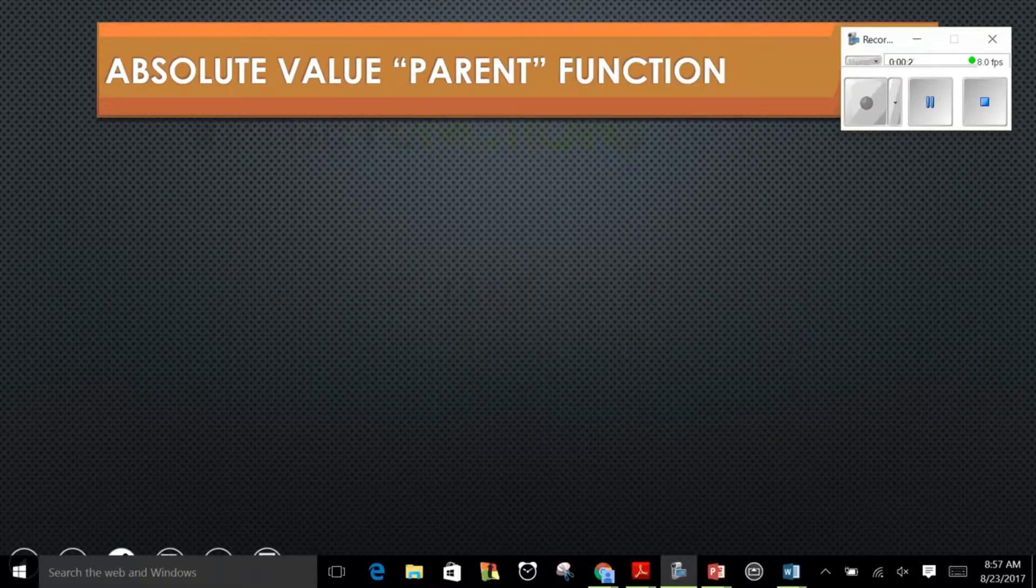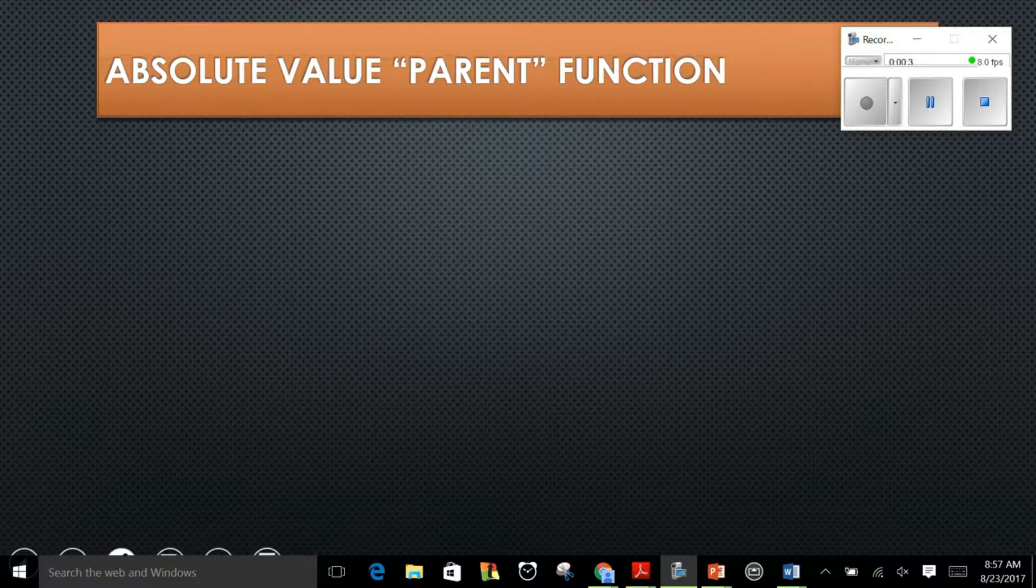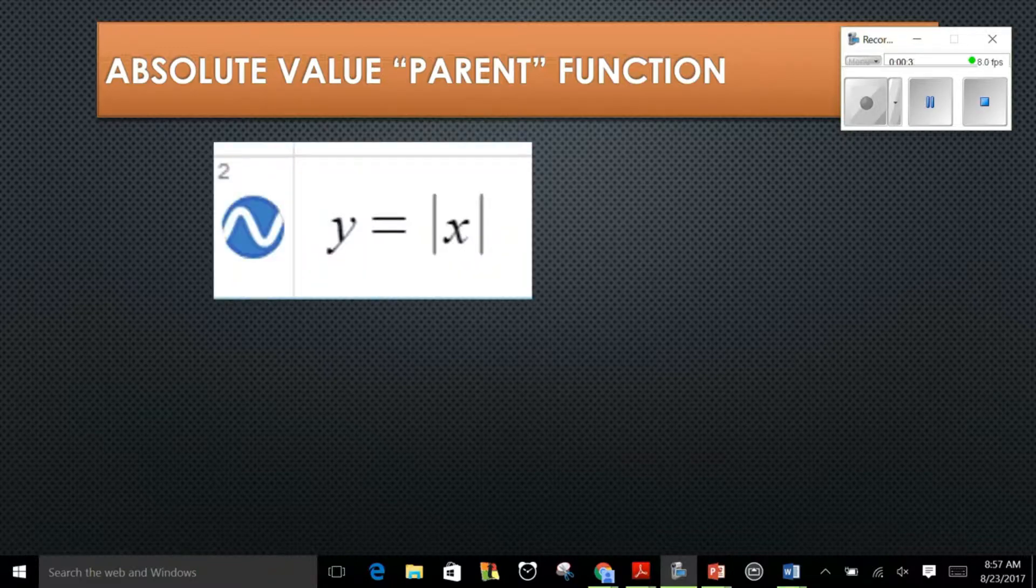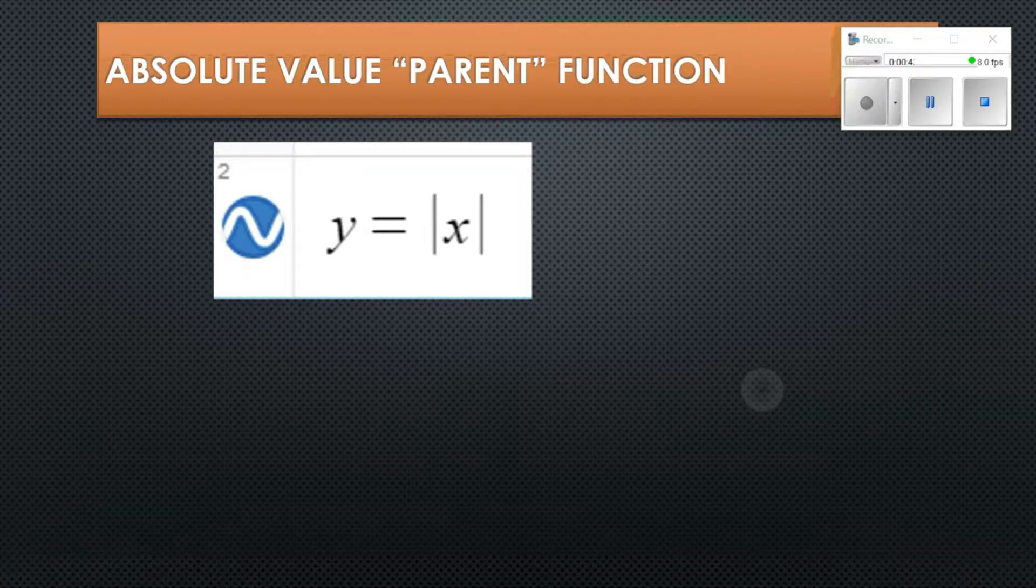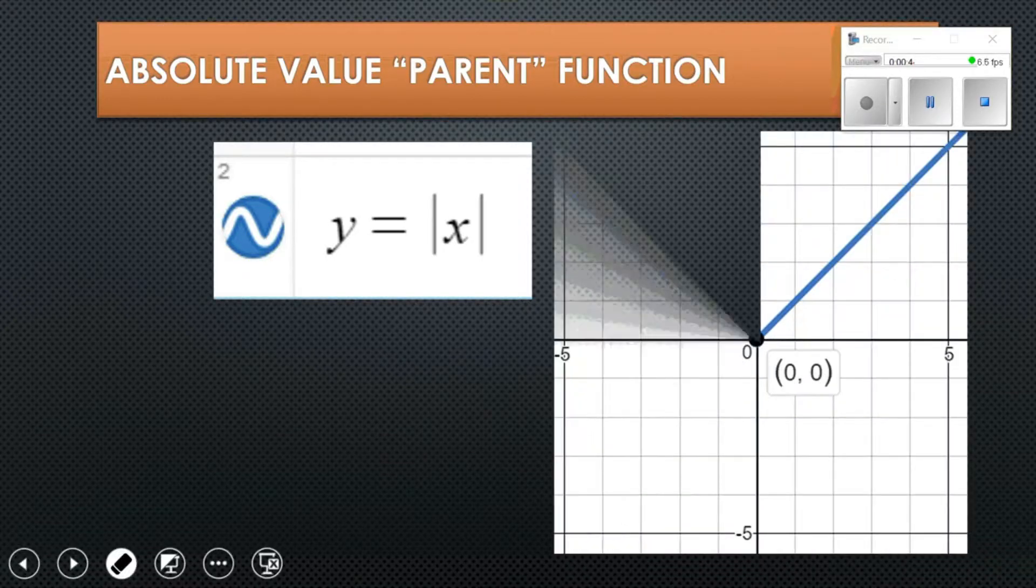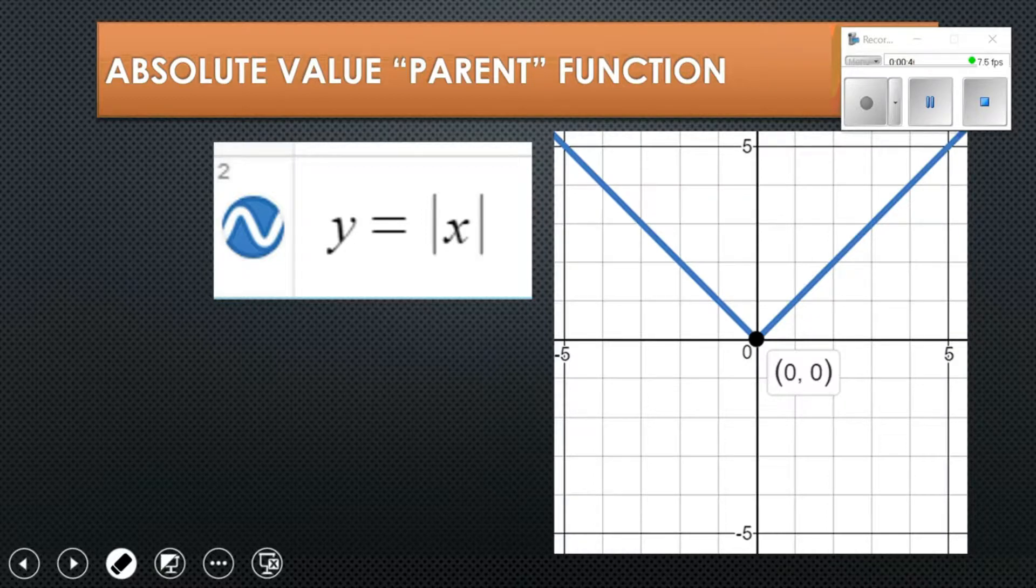Anytime we talk about a family of functions we have what we call a parent function, and that's the most basic type of function in that family. In this case we have y equals absolute value of x. The graph for that function looks like this. It makes a v shape and it makes sense because we plug in a value we get a positive value out.